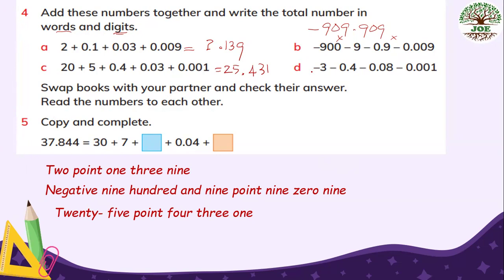Part D, negative 3. We add in order. 3.481. Negative 3. We add in order. Negative 3.481. This is number four. Swap box with your partner. And check their answer. Read the numbers to each other. With your partner. Check your answer.